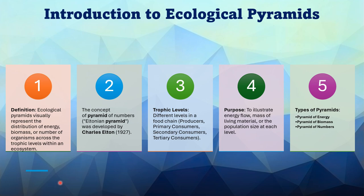Ecological pyramids are a visual representation of how the energy, biomass, and number of organisms at each trophic level are arranged in a pyramid shape. Different organisms — for example, producers, consumers, and carnivores — are represented at different levels. This concept was given by Charles Elton in 1927.